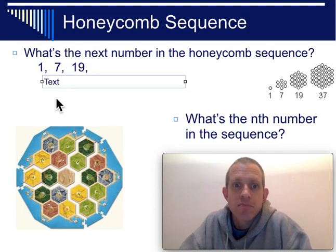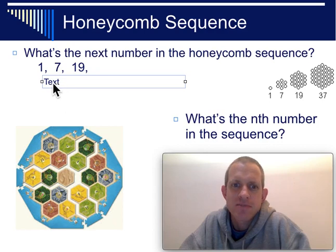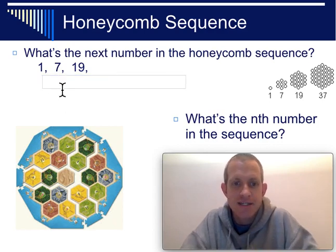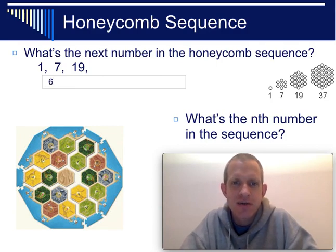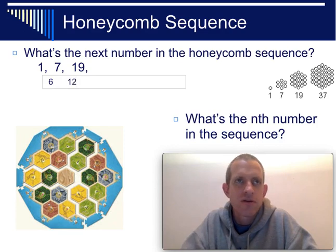In order to find the next number in the sequence, let's see if we can figure out what the pattern is. If we look between 1 and 7, find its common difference, that would be a 6. And then, between 7 and 19, that would be a 12.